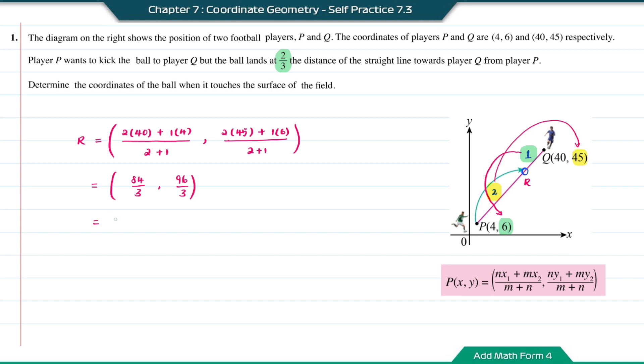Simplifying, this will equal 28 and 32. So the coordinate R here will be (28, 32).